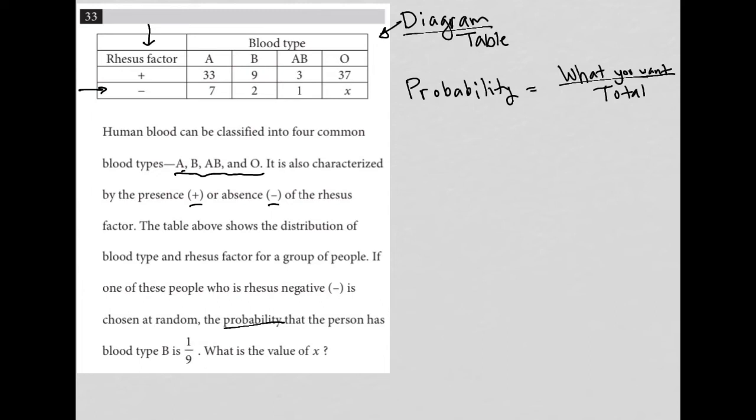So the person has blood type B, so that's what we want. How many people are rhesus negative? So this bottom row. How many people are rhesus negative and have blood type B? Well, that's two people, so my numerator will be two.